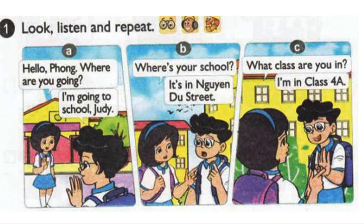B. Where's your school? It's in Witten Zoo Street. C. What class are you in? I'm in class 4A.